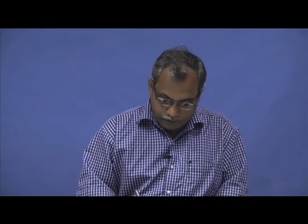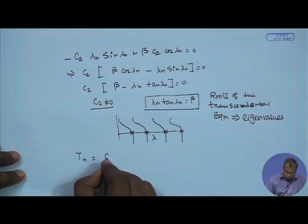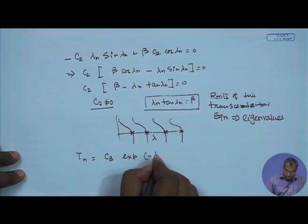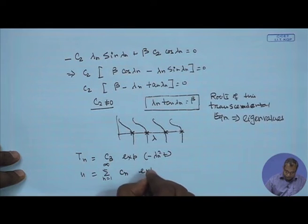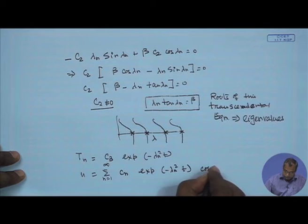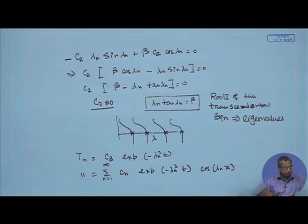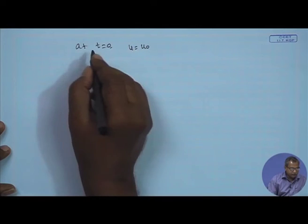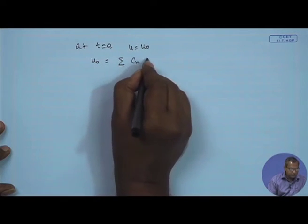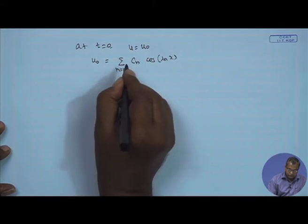Once the eigenvalues are found, the time-dependent part is T_n = c_3 exp(minus λ_n² t), and the general solution is u(x,t) = summation from n=1 to infinity of c_n exp(minus λ_n² t) cos(λ_n x). The constant c_n is evaluated from the initial condition: at t=0, u equals u_naught.